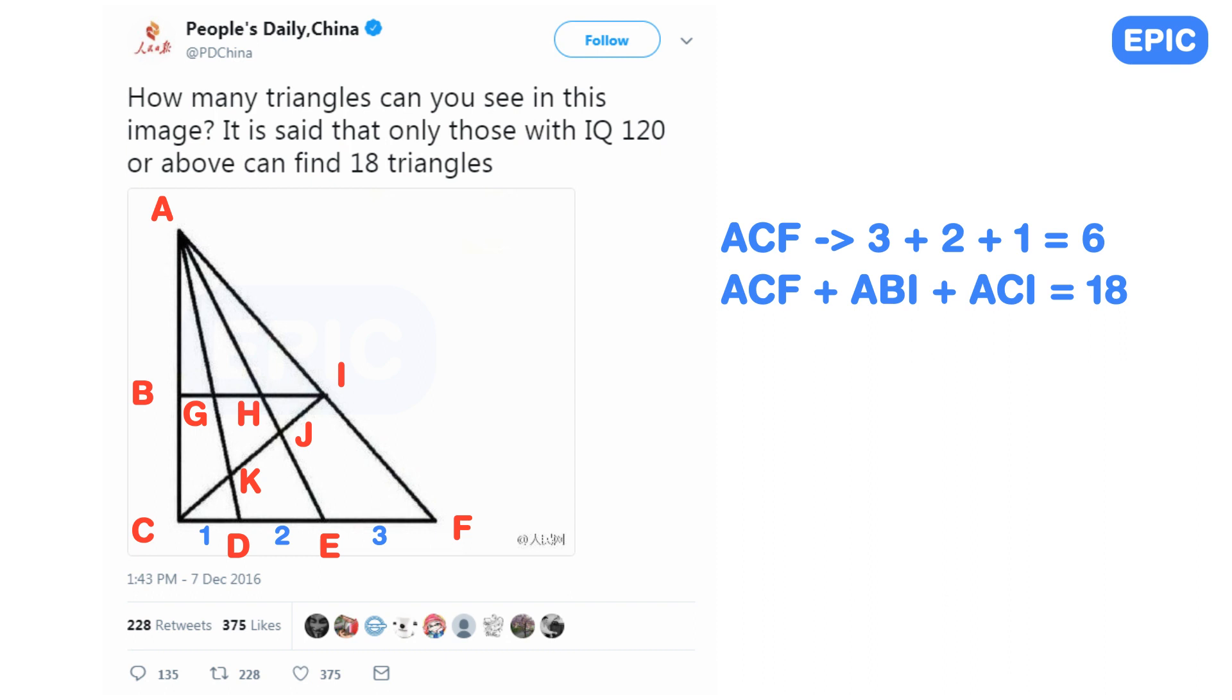Now there are 2 more subgroups. Triangles BCI and CFI are 1 part base triangles with 3 horizontal lines. So it will have 1 into 3 equals 3 triangles.